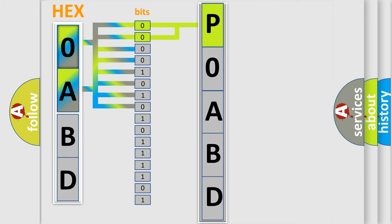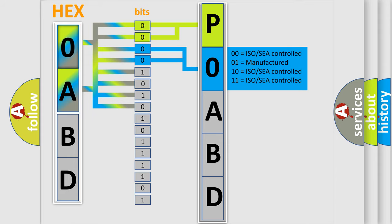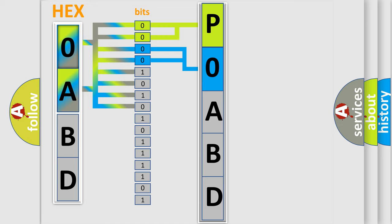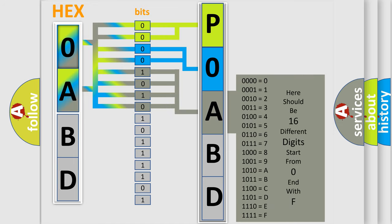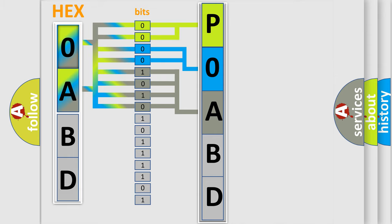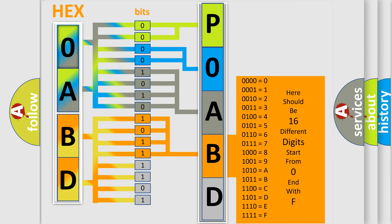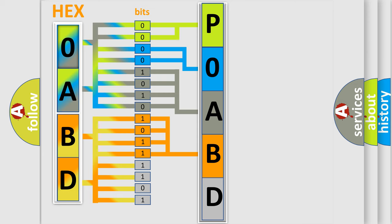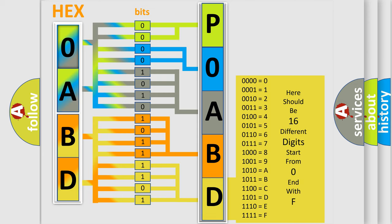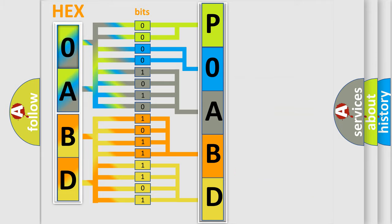The next two bits determine the second character. The last bits of the first byte define the third character of the code. The second byte is composed of a combination of eight bits — the first four bits determine the fourth character of the code, and the combination of the last four bits defines the fifth character. A single byte conceals 256 possible combinations. We now know how the diagnostic tool translates the received information into a more comprehensible format.